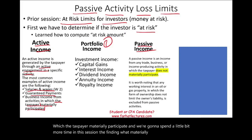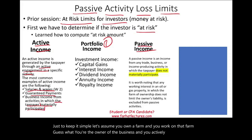Simply put, let's assume you own a farm and you work on that farm. You're the owner of the business and you actively cultivate the land, plant the land, sow the land, so on and so forth. So you are active.